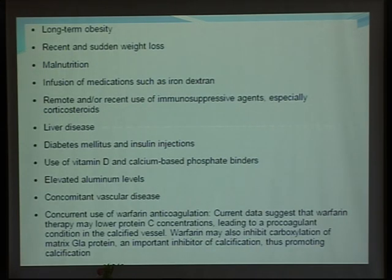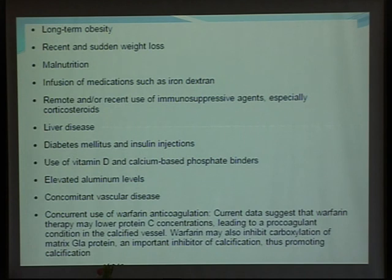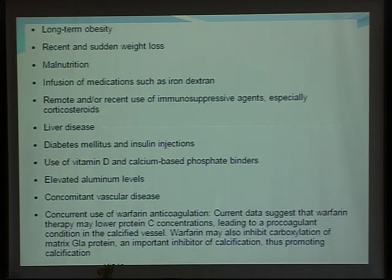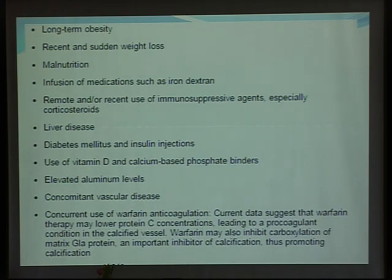There are many risk factors, including low or high BMI obesity, recent and sudden weight loss, infusions of medications such as iron dextran, recent use of immunosuppressive drugs — many of our patients with nephropathy are given immunosuppressive drugs — liver disease, diabetes mellitus, and insulin injection, since the injection site itself can be a precipitating factor. Use of vitamin D and calcium-based phosphate binders causing hypercalcemia, elevated aluminum level from contaminated dialysis water or aluminum-containing phosphate binders, concomitant vascular disease, and use of warfarin.